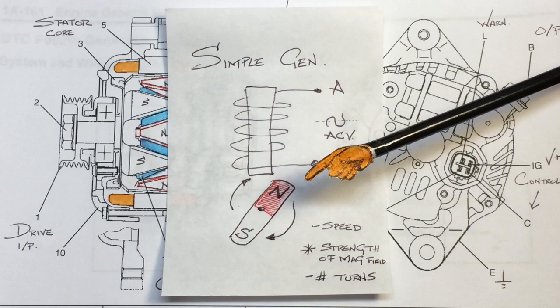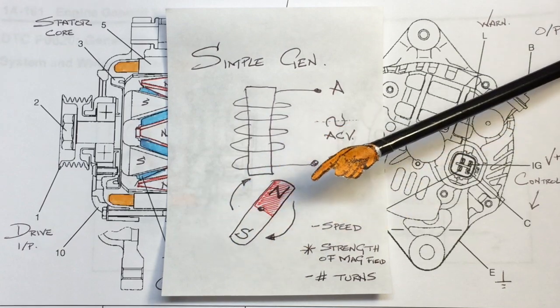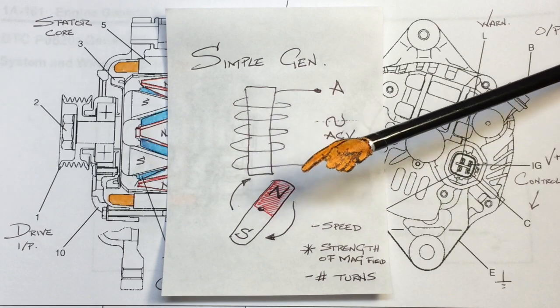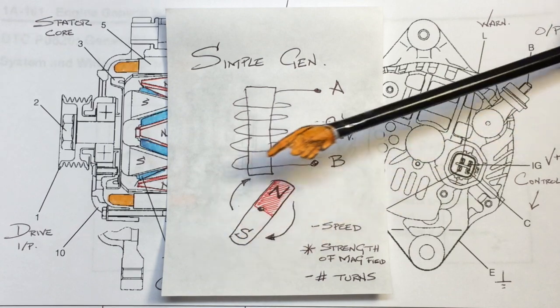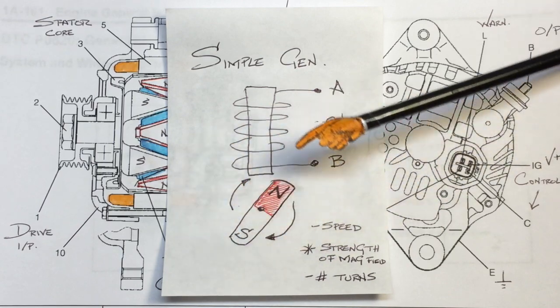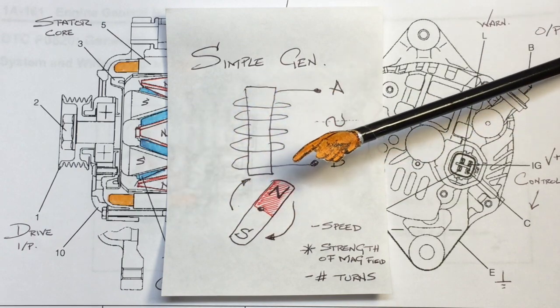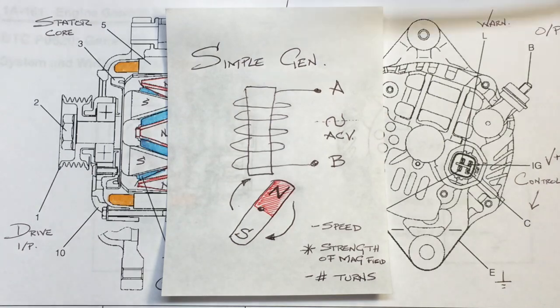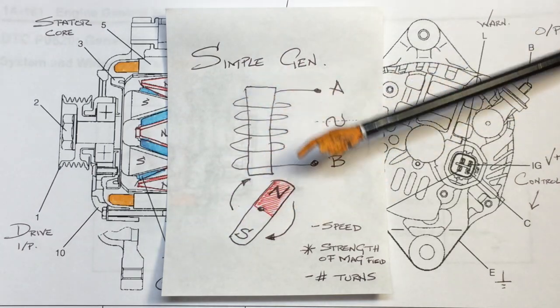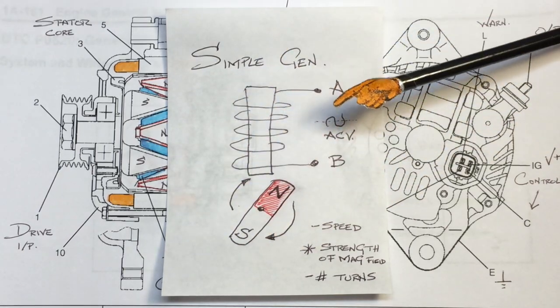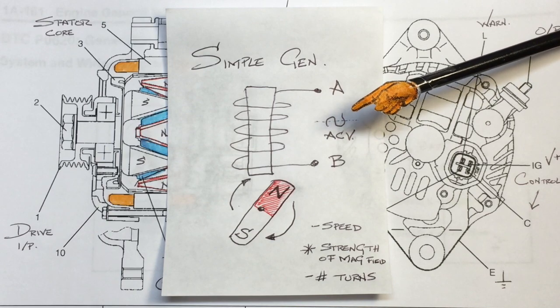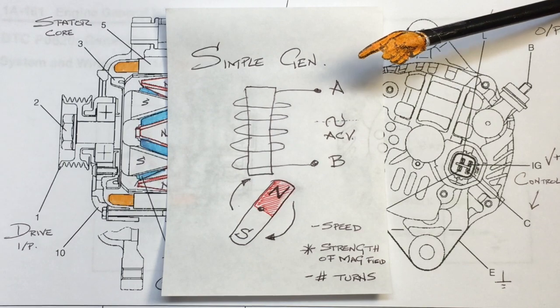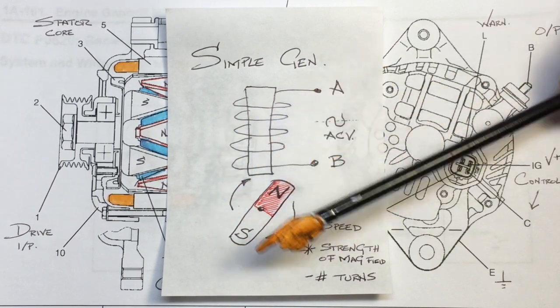Back to our basic drawing here, we have a permanent magnet, just a horseshoe magnet type arrangement. We rotate that permanent magnet, providing a field that cuts across the coils of wire. We have an iron core in there as an intensifier. When we rotate that, we can actually generate a small AC voltage across the pins A and B here.